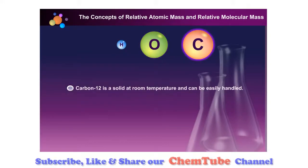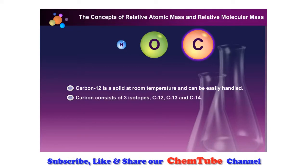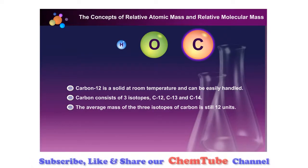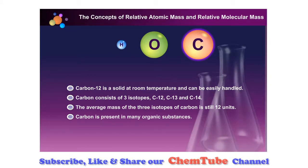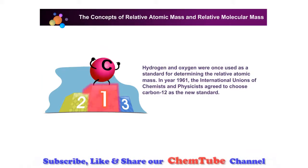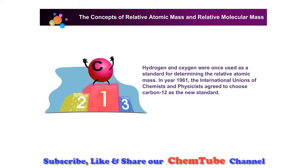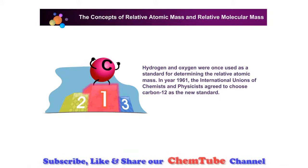Carbon-12 is solid at room temperature and can be easily handled. Carbon-12 consists of carbon-12, carbon-13, and carbon-14. The average mass of the three isotopes of carbon is still 12 units. Carbon is present in many organic substances. Hydrogen and oxygen were once used as a standard for determining the relative atomic mass.